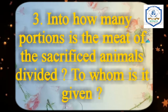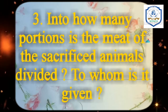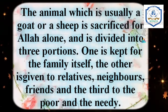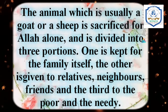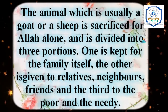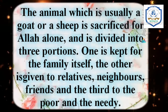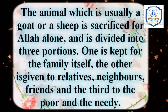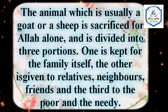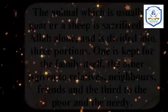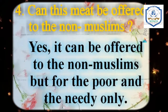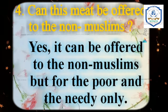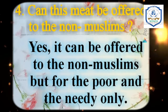The third question is: into how many portions is the meat of the sacrificed animals divided, and to whom is it given? The answer is: the animal, usually a goat or sheep, is sacrificed for Allah alone and divided into 3 portions — one kept for the family, one given to relatives, neighbours, and friends, and the third to the poor and needy. The fourth question is: can this meat be offered to non-Muslims? Yes, it can be offered to non-Muslims, but for the poor and needy only.